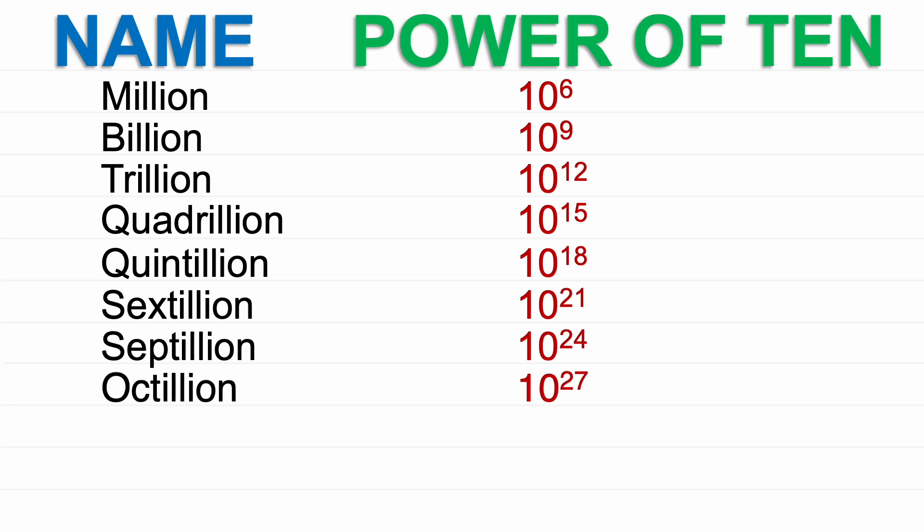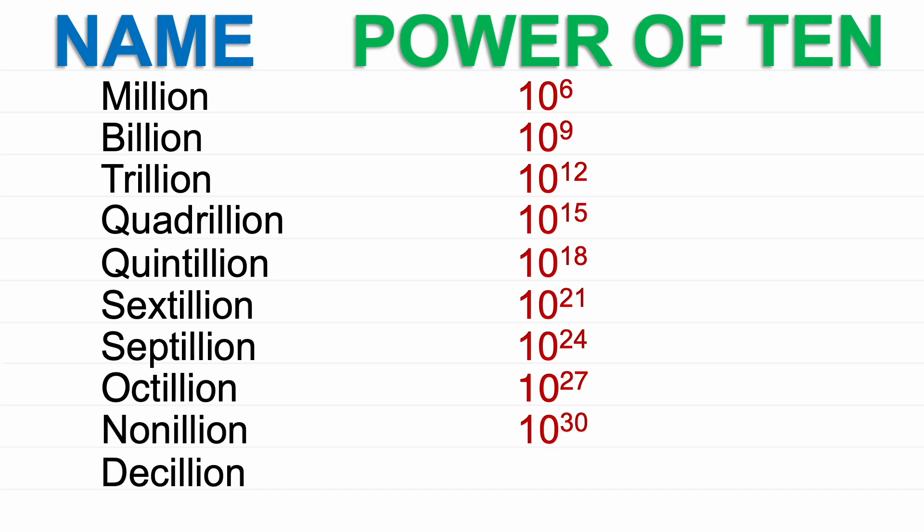Octillion: 10 to the power of 27. Nonillion: 10 to the power of 30. Decillion: 10 to the power of 33.